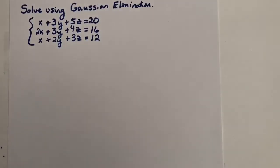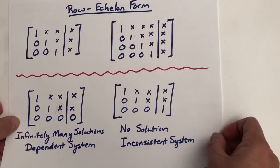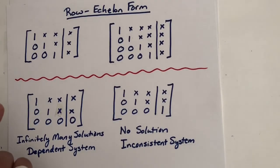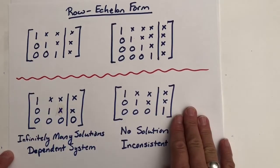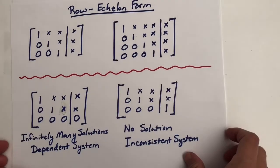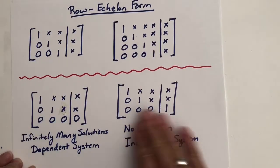Before we get to that system that we're going to solve, let me remind you what row echelon form looks like. It requires that the first non-zero number in each row be one, as is the case in each of these matrices. Remember that first non-zero number is called the leading entry. The leading entry in each row is to the right of the leading entry in the row immediately above it, and notice that is the case in each of these.